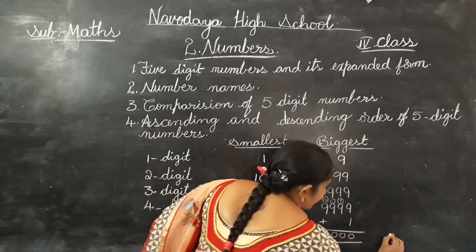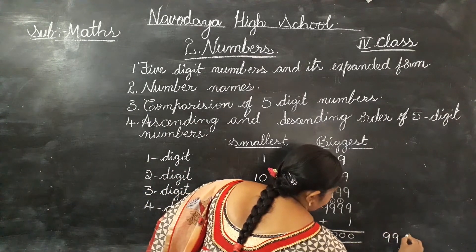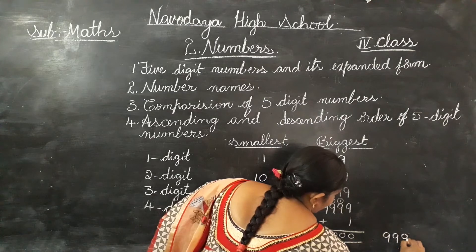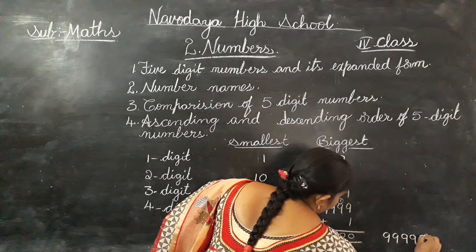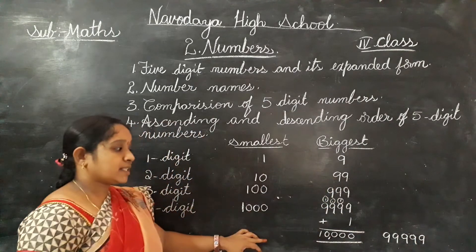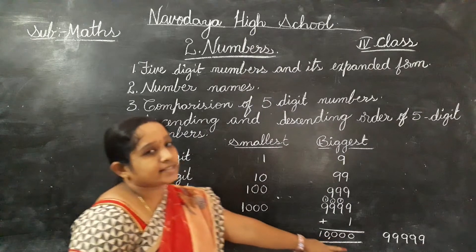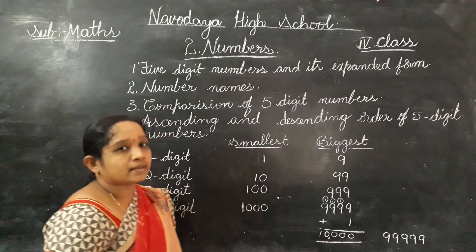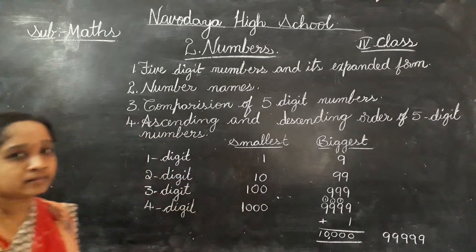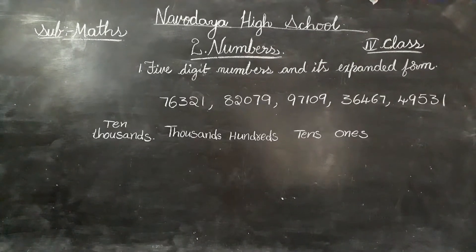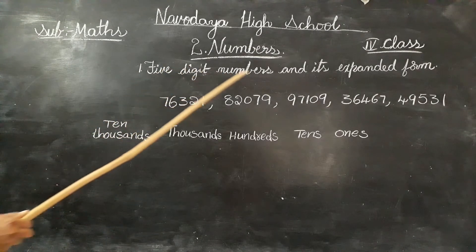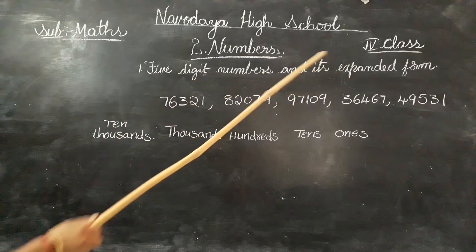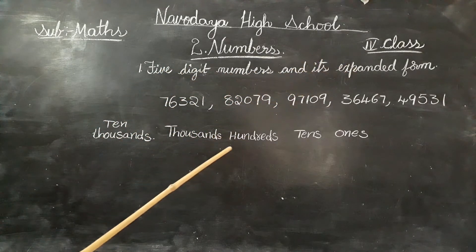And ninety-nine thousand nine hundred and ninety-nine is the biggest five digit number. Now we are going to learn five digit numbers and their expanded form.